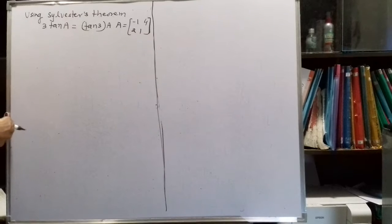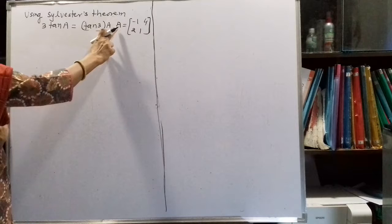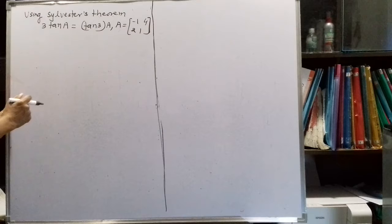We have to show that 3·tan(A) is equal to tan(3A), where A is the 2×2 matrix with entries -1, 4, 2, and 1.